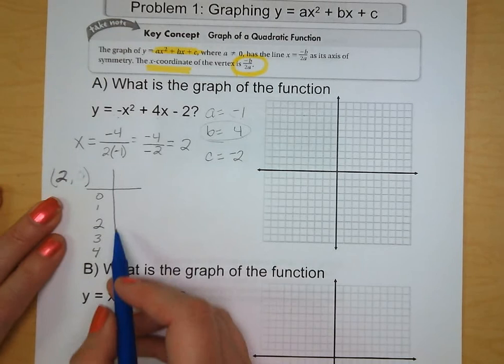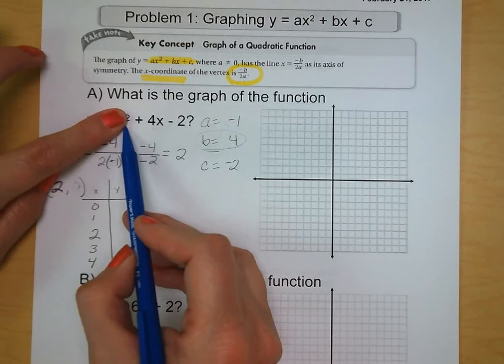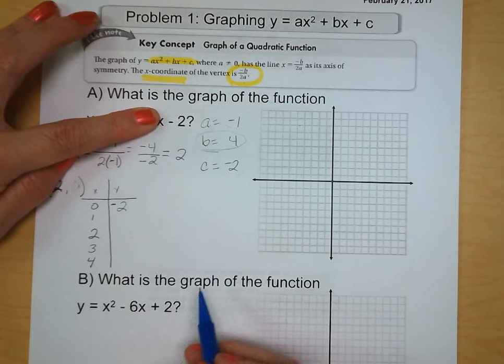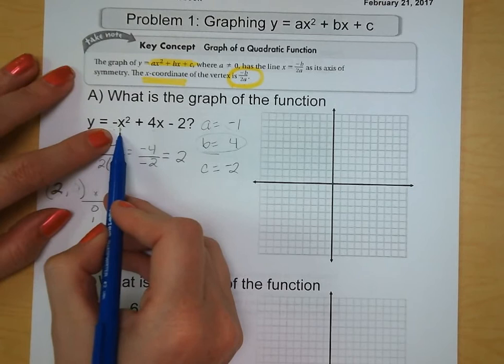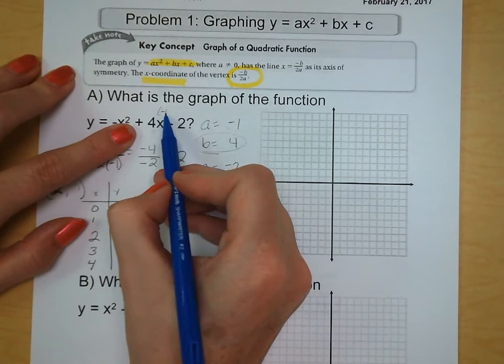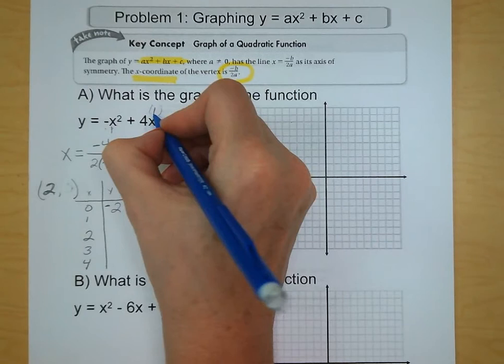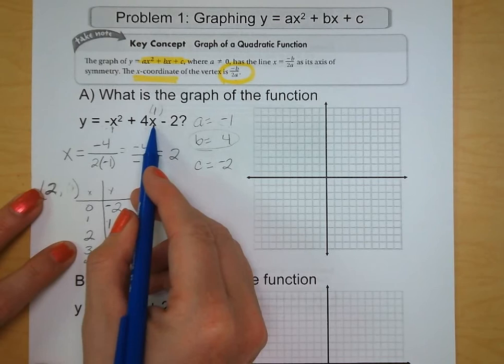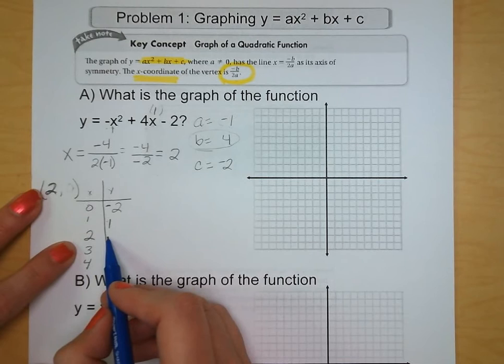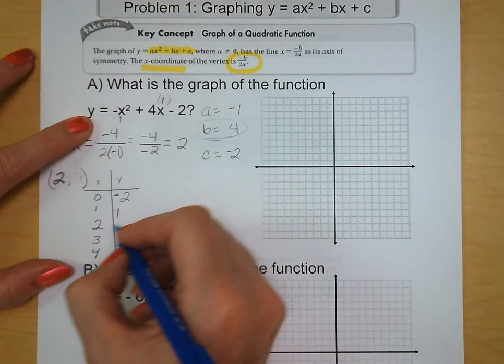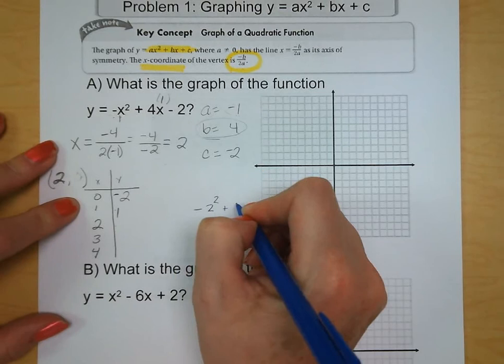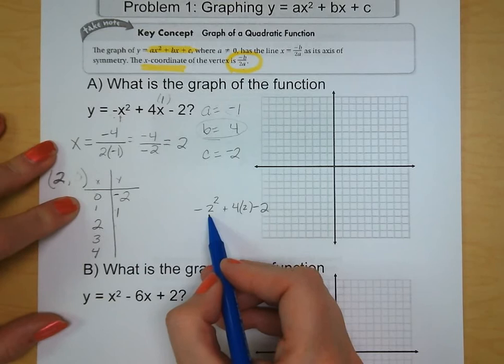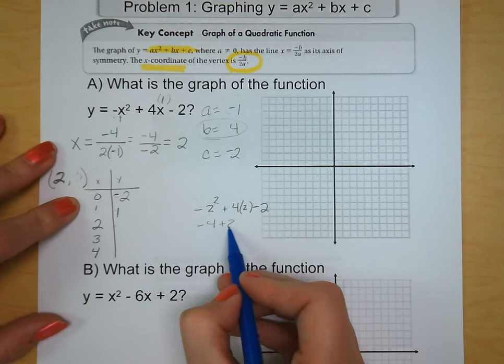When we plug in 0, we're going to end up with 0 plus 0 minus 2 is negative 2. We put a 1 in, so the opposite of 1 squared is negative 1 plus 4, so negative 1 plus 4 is 3 minus 2 is 1. The opposite of 2 squared, 2 squared is 4, the opposite is negative 4, plus 8 or no, plus 4 is 0.